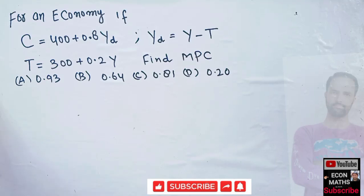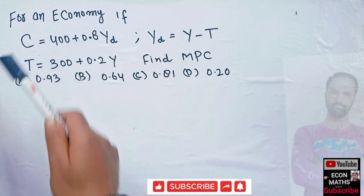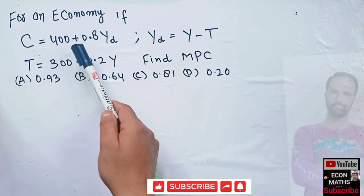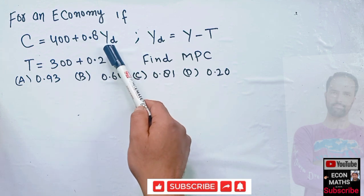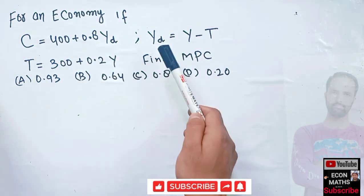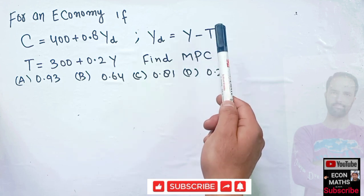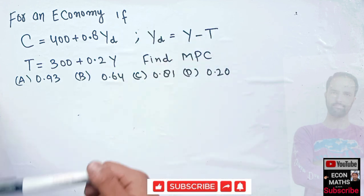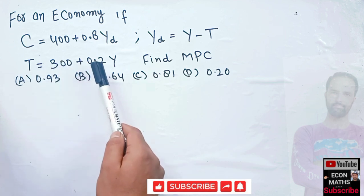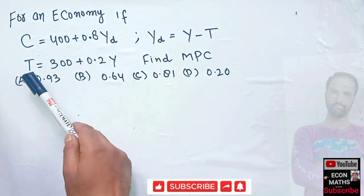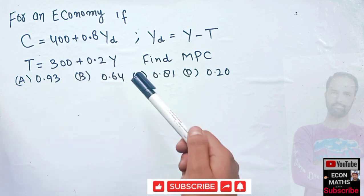Let us solve a question on how to find the marginal propensity to consume. For an economy, if consumption is equal to 400 plus 0.8 Y subscript D, where Y subscript D is the disposable income, and disposable income is equal to Y minus T — meaning when we subtract taxes from income, we get disposable income. A tax rate T is equal to 300 plus 0.2 Y, where 0.2 denotes the marginal tax rate.